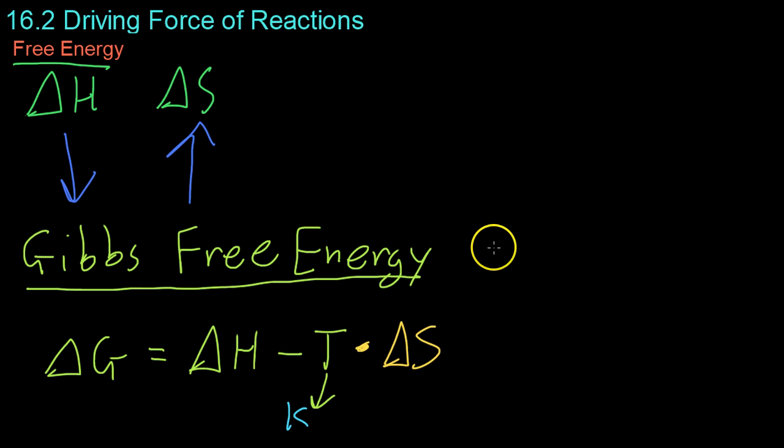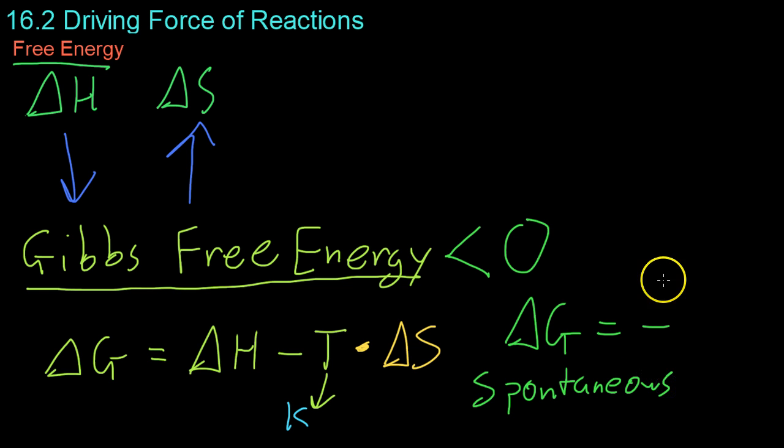Finally, if Gibbs free energy is less than zero, in other words, delta G is negative, then the reaction is what is known as spontaneous. And we'll get into a more formal definition, but that basically means that the reaction can happen given the right conditions.